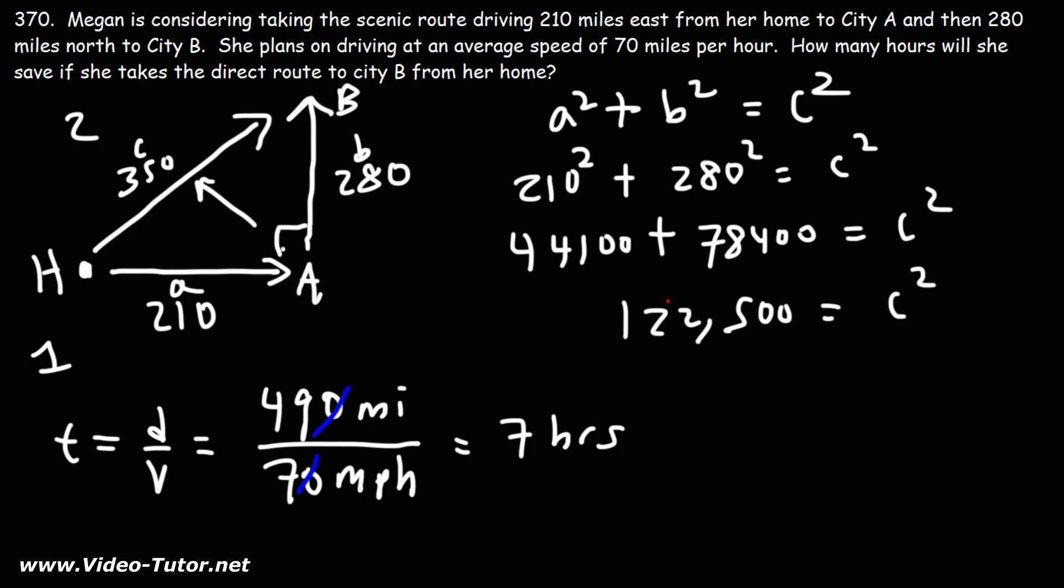Now let's take the square root of both sides. The square root of C squared is C, and the square root of 122,500 is 350.